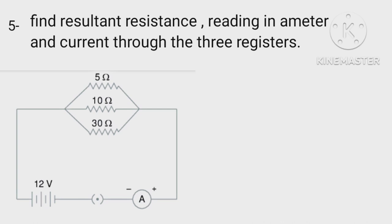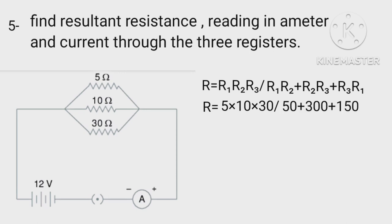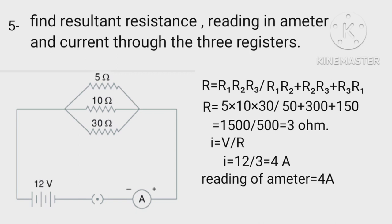Combined resistance in parallel R equals R1 R2 R3 upon R1 R2 plus R2 R3 plus R3 R1. Now combined resistance equals 5 times 10 times 30 upon 50 plus 300 plus 150. R equals 1500 by 500 equals 3 ohms. Now as we know I equals V upon R. Therefore, I equals 12 upon 3 equals 4A. Reading of ammeter is 4A.